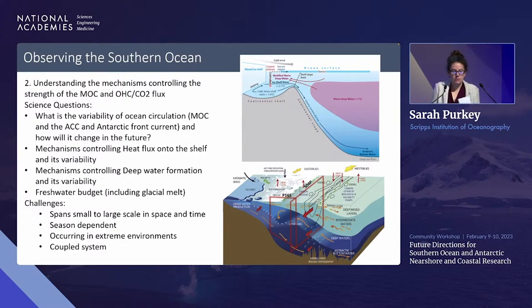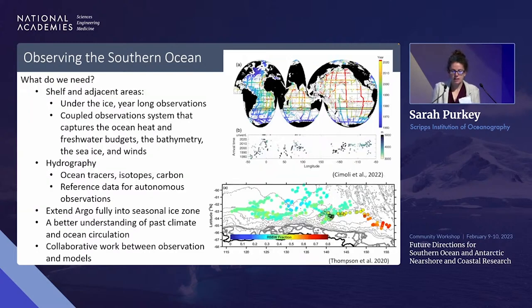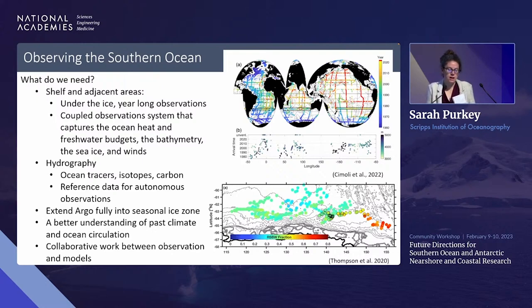We need to understand what the heat fluxes are onto the shelf and their variability, the variability in deep water formation, and the freshwater budget. The challenge is that it spans very large scales, it's seasonally dependent, it's an extreme environment, and it's a very coupled system. Yesterday we heard a lot about the needs of the shelf and adjacent regions — we heard over and over again that we need to get under the ice, especially in winter.